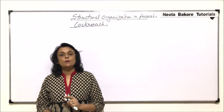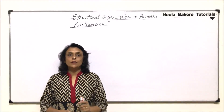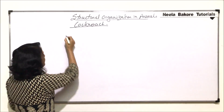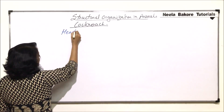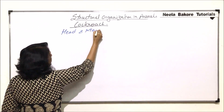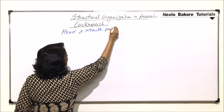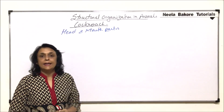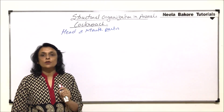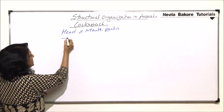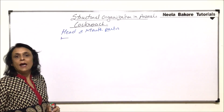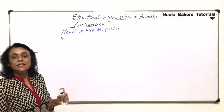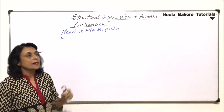In this part, we'll be talking about the head region of cockroach and the mouth parts. As we have already discussed, the head is at right angles to the body. That means if the body is like this, the head is going to be at right angle and the mouth is on the lower side. That means it is hypognathous.